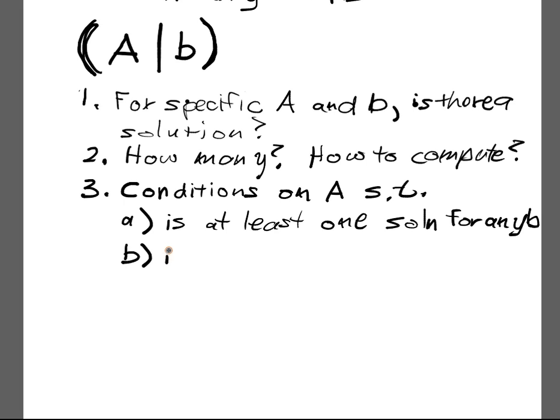How about there is at most one solution for any B? Part B, that is, I want a condition on A that essentially constrains me so that I have at most one solution for any B. And part C, conditions such that for any B I have a unique solution.